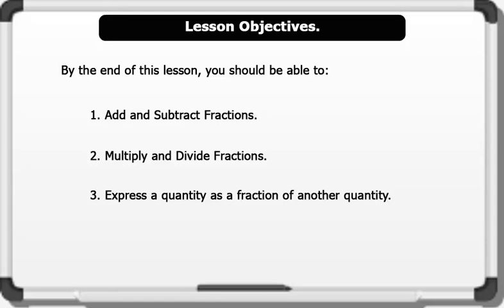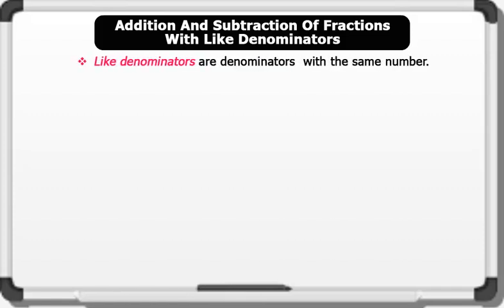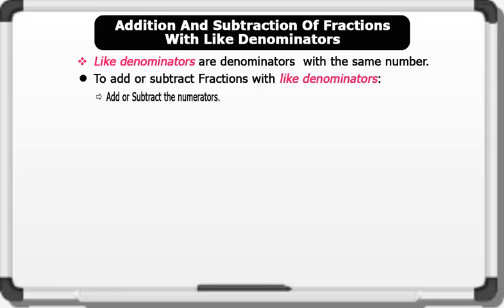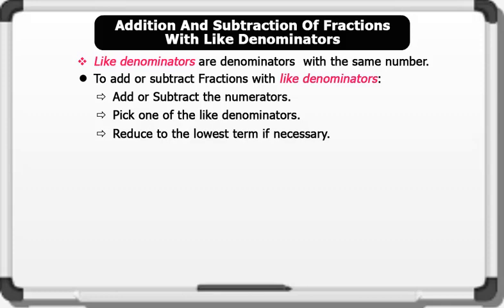Addition and subtraction of fractions with like denominators. Note that like denominators are denominators with the same number. To add or subtract fractions with like denominators, we simply add or subtract the numerators, pick one of the like denominators, then reduce to the lowest term if necessary. Let's see some examples.